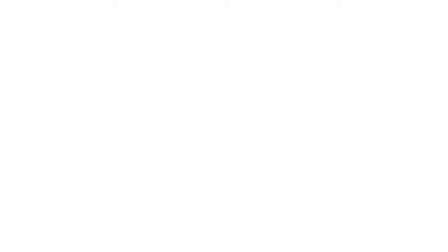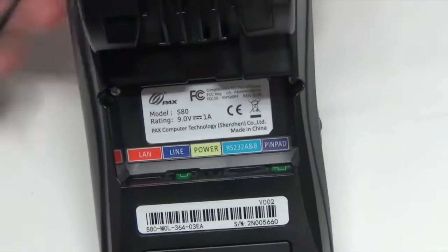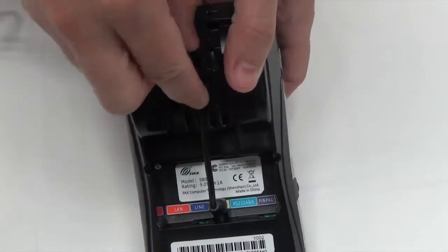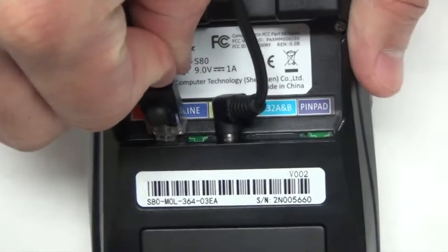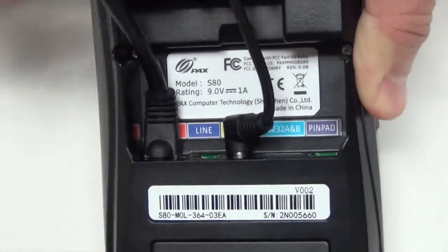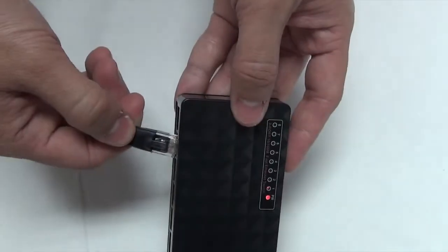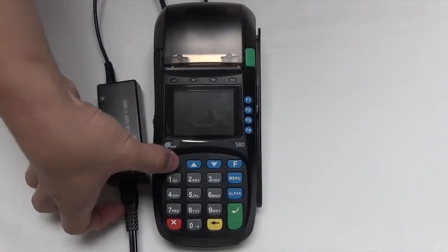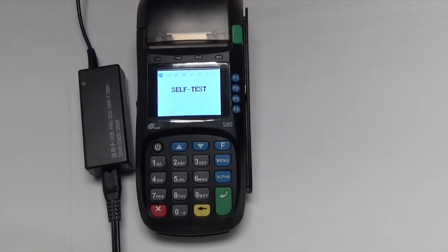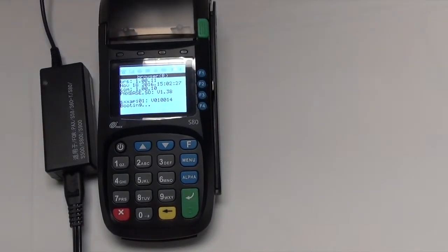Step 7. Set up the credit card terminal. Connect the power cord. Plug in the network cable into LAN port. Then connect it to the switch. Power it on to download the file. It will show ready.